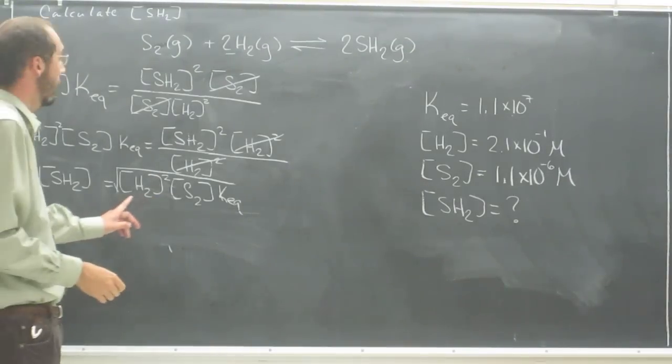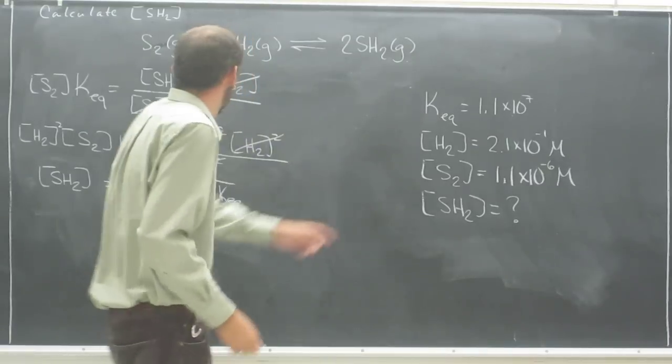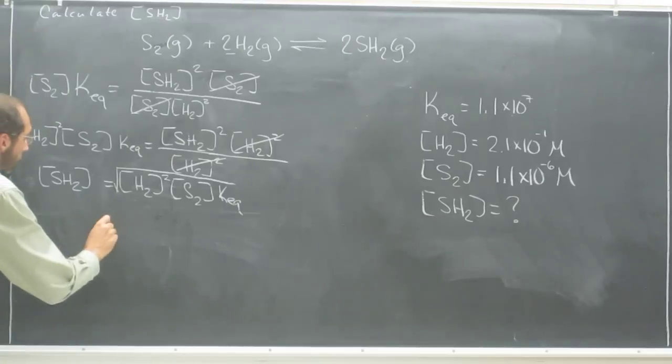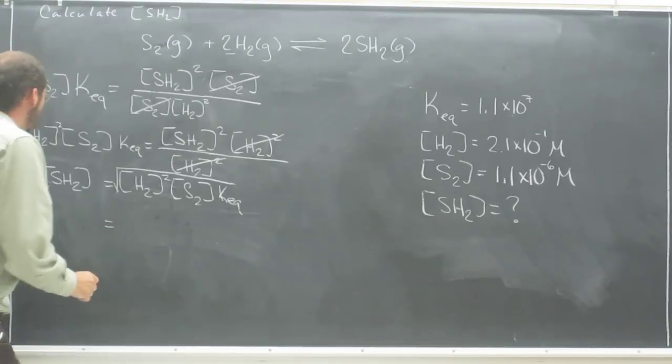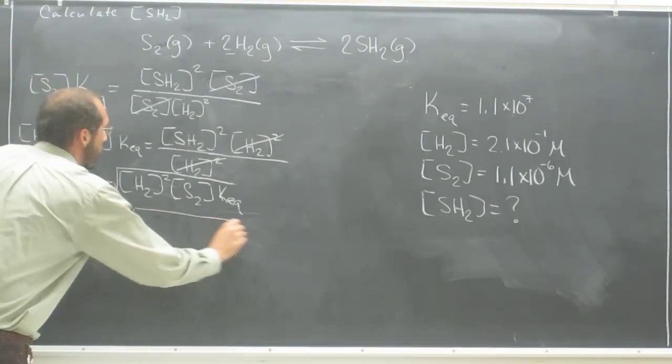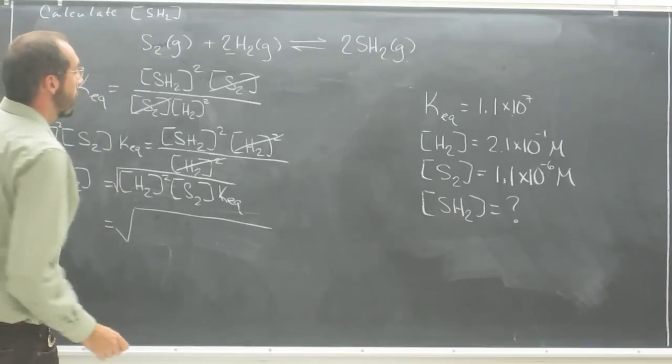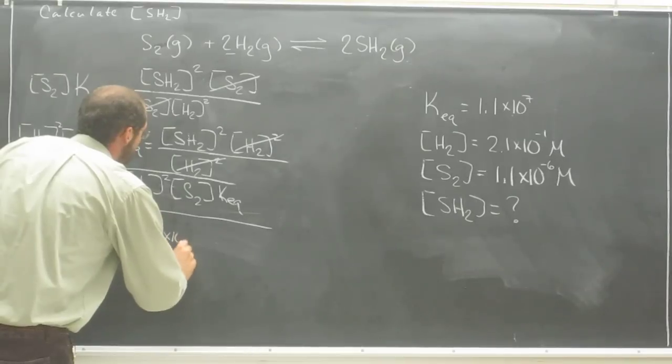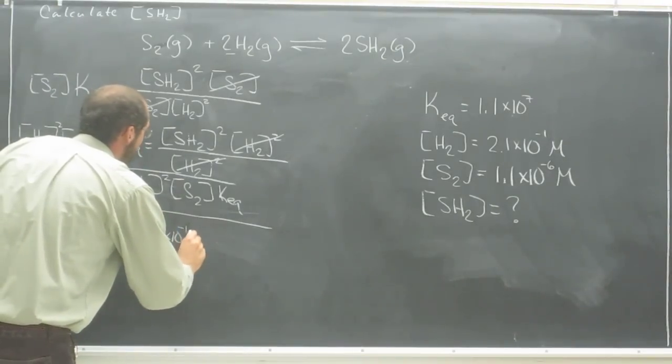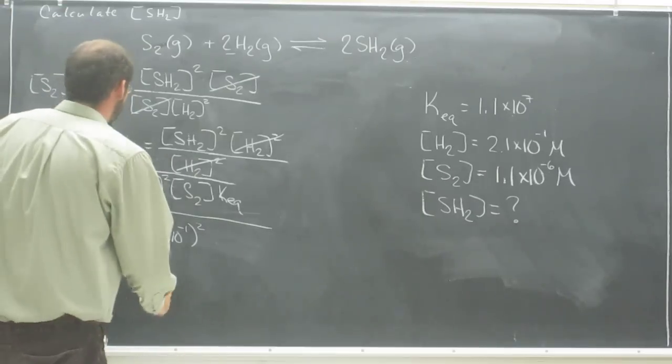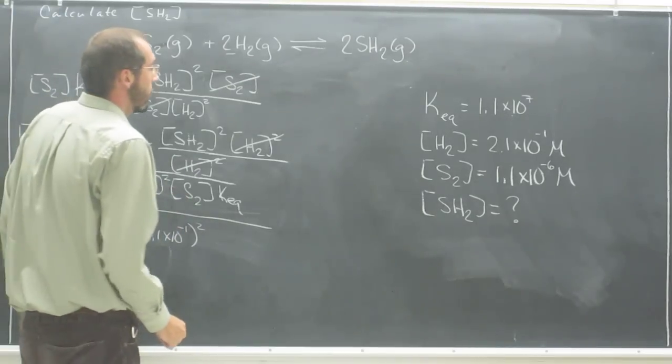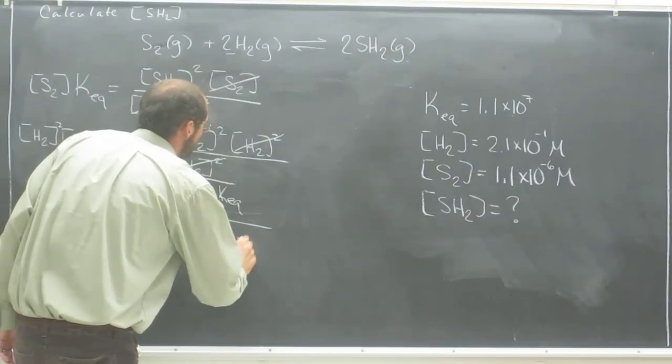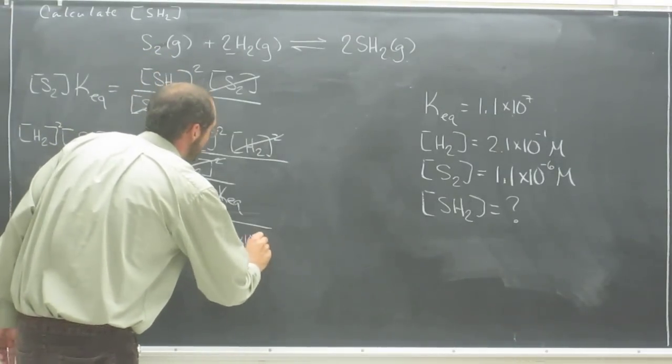So now all we've got to do is take these numbers here and plug them into this equation. So the concentration of SH2 equals the square root of the hydrogen ion concentration squared, which is 2.1 times 10 to the negative 1 squared, times the sulfur concentration, 1.1 times 10 to the negative 6.